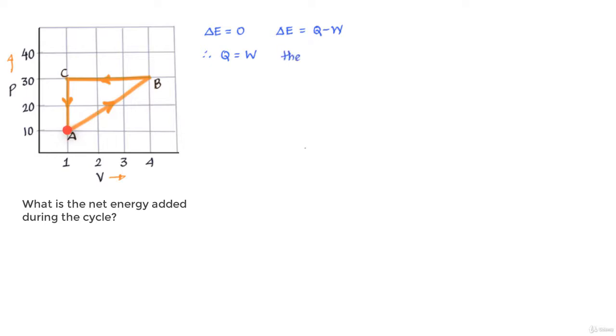So let us therefore find what is the work done here. You can see from A to B the work done is area under the curve AB which is equal to half into 30 plus 10 into 3 which is equal to 60 joules and this is positive work since the volume is expanding.